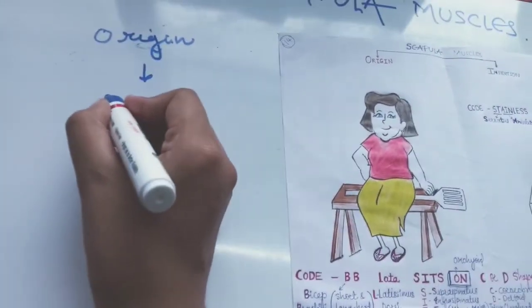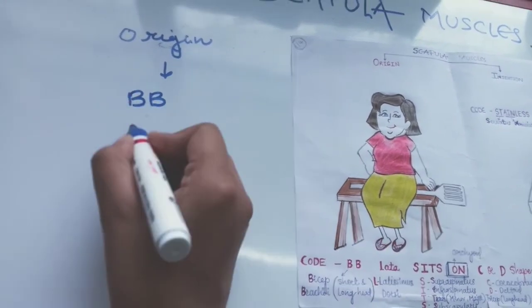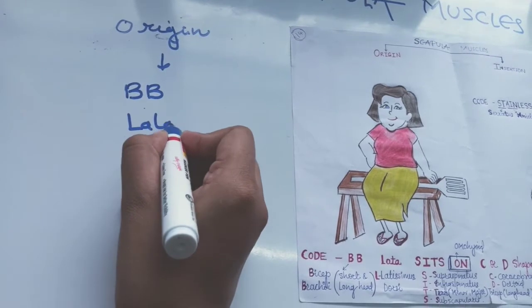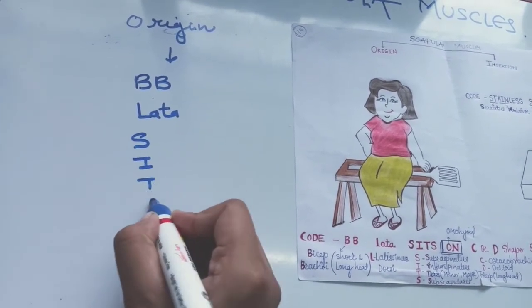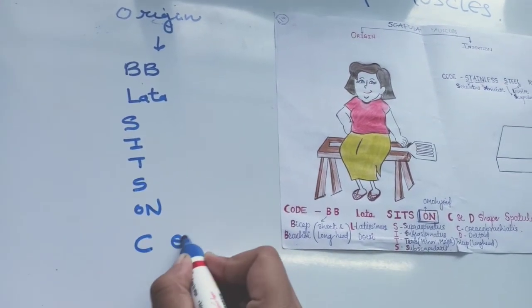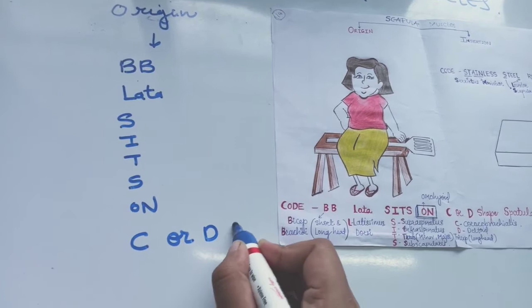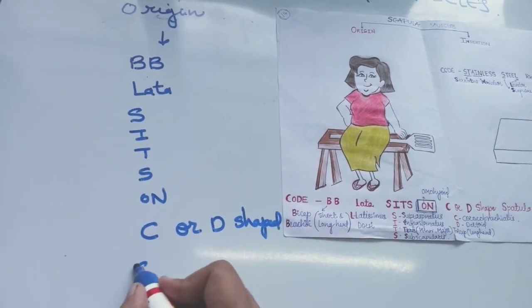The mnemonic is: BB Lata sits on C or D shape spatula.